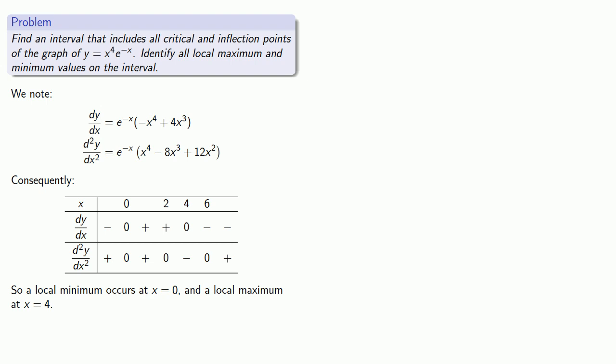Likewise, we see that the graph is concave up until x equals zero and concave up afterwards, so no change in concavity occurs at x equals zero, but it does switch to being concave down at x equals two, and then switches back to being concave up at x equals six. So we have an inflection point at x equals two and x equals six.